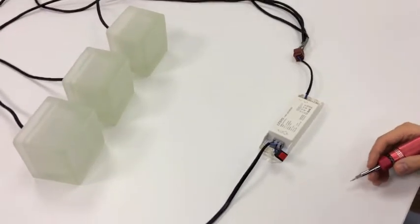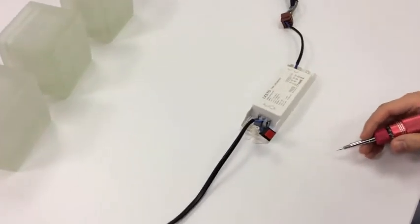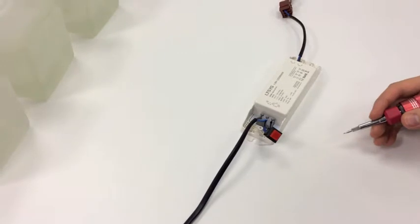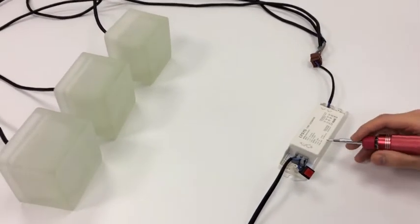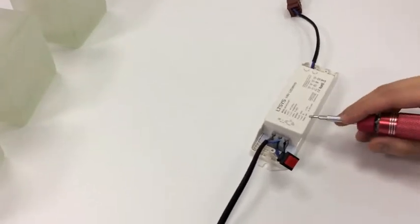I will demonstrate how to use a simple LED driver which can be used to control the brightness of one line of LEDs. Please note that the maximum output of this driver is 36 watts.